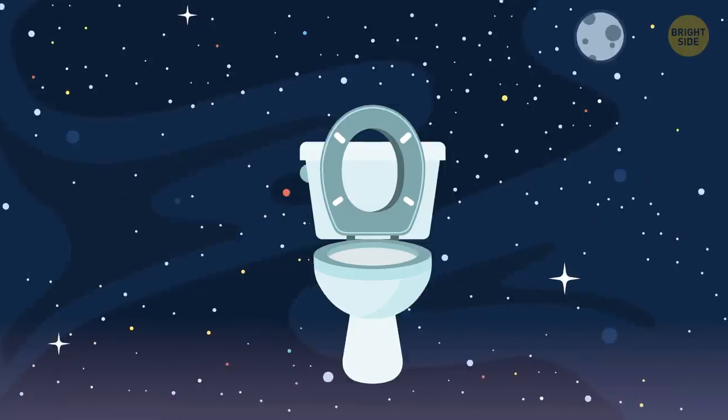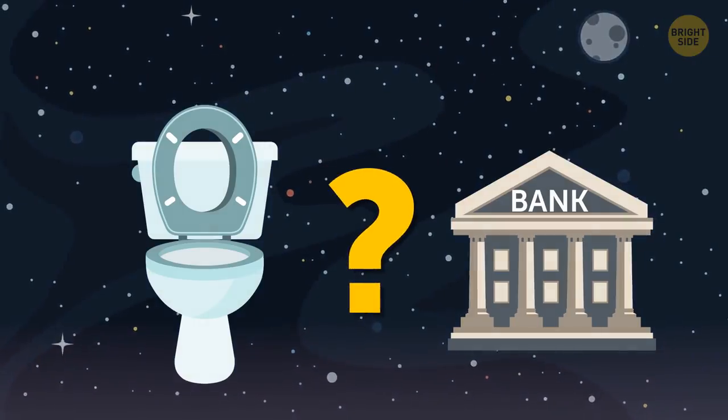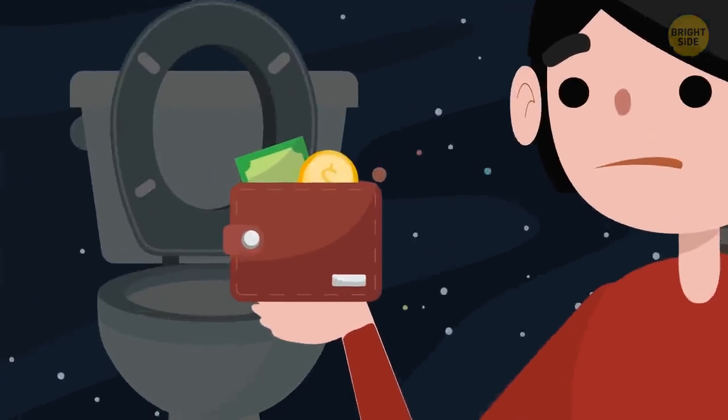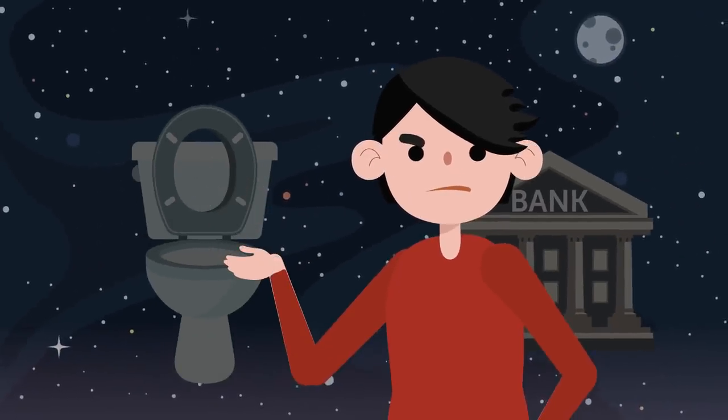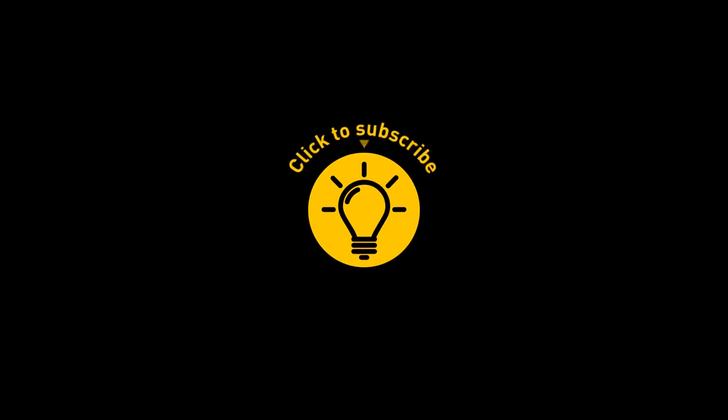Finally, this thought. Why are toilets like really bad banks? Because after you make a deposit, it somehow disappears. Ah, come on, it was funny in third grade. Hey, if you learned something new today, then give the video a like and share it with a friend. And here are some other cool videos I think you'll enjoy. Just click to the left or right, and remember, stay on the Bright Side of life!